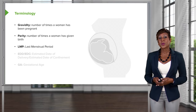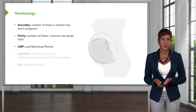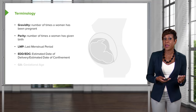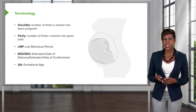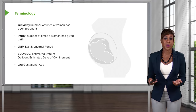Another term is LMP, or last menstrual period. You'll see this abbreviated a lot. Last menstrual period is very important in pregnancy because it helps us determine gestational age. EDD and EDC — the estimated date of delivery and the estimated date of confinement — are used interchangeably and tell us when we expect a patient to deliver, which would be 40 weeks of pregnancy. GA is the gestational age: how many weeks and days a patient is pregnant throughout their pregnancy. These terms are really important as we go through the rest of the lecture.